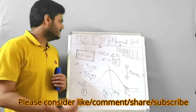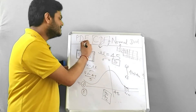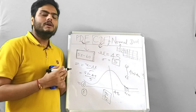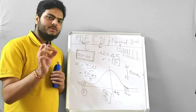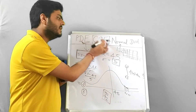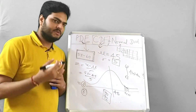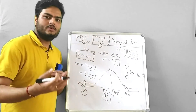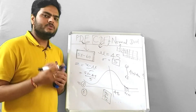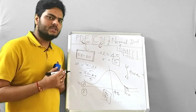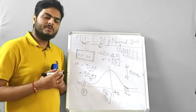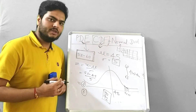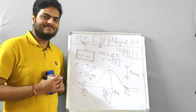This is how we relate probability density function with cumulative distribution function, and how normal distribution connects to these fundamental concepts. There are other distributions too — Bernoulli, Uniform, Poisson — if you want me to cover those, write in the comments. If you have any doubts, write in the comments as well. See you in the next video — stay safe and take care.